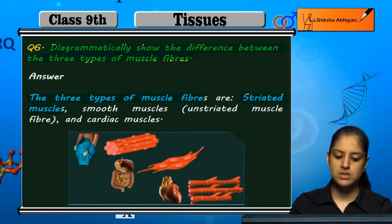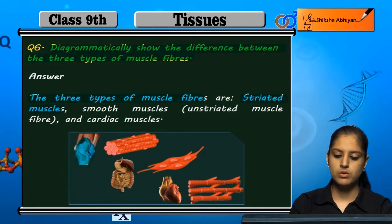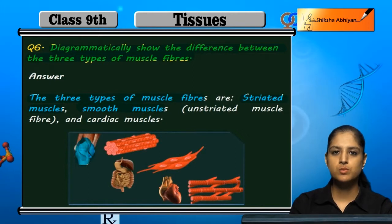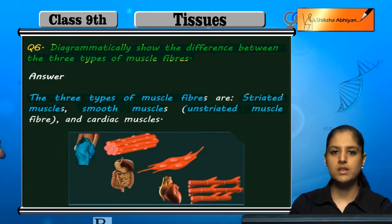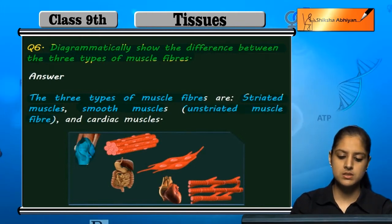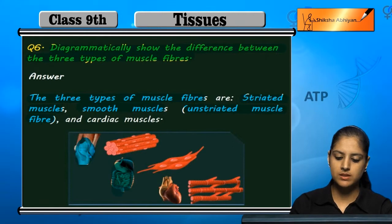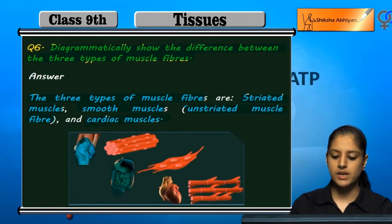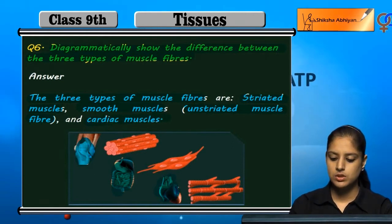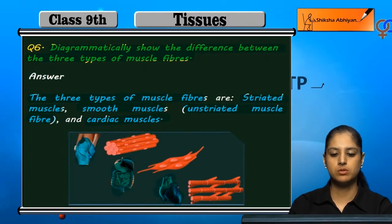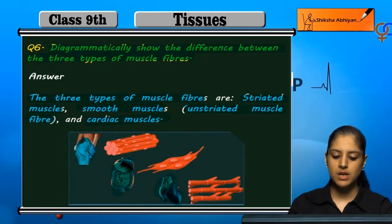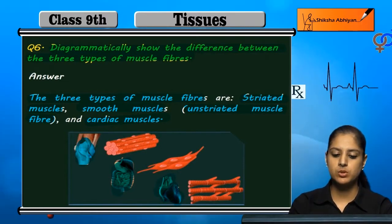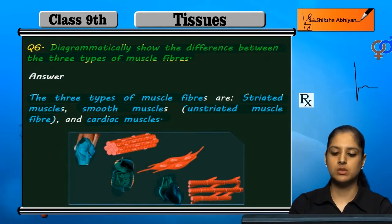The first type is skeletal muscles, which we can see in the bones. Next is smooth muscles, or unstriated muscles, which are found in organs. The third is cardiac muscles, which are present in the heart. Because bones are very stiff, their muscles are striated.